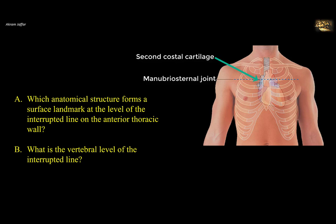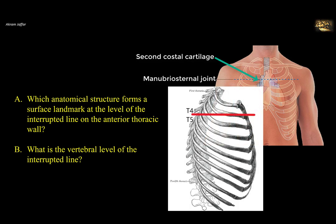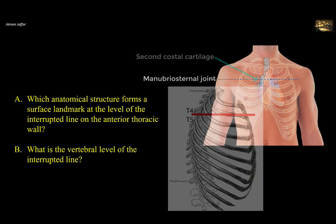And hence, the ribs and intercostal spaces can be counted. The transverse thoracic plane extends posteriorly and lies at the level of the intervertebral disc between the fourth and fifth thoracic vertebrae.